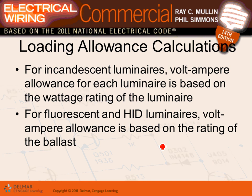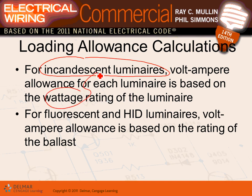Load allowance calculation: for incandescent luminaires, the allowance is based on the watts of the luminaire itself. For fluorescent, it's based on the ballast. When you have incandescent lamps, the consumption is only from the lamp. If you have a ballast, the ballast also consumes energy. For example, if you have two T8 lamps at 32 watts each — 64 watts total — the actual consumption may be 70 watts because the ballast itself consumes some energy.